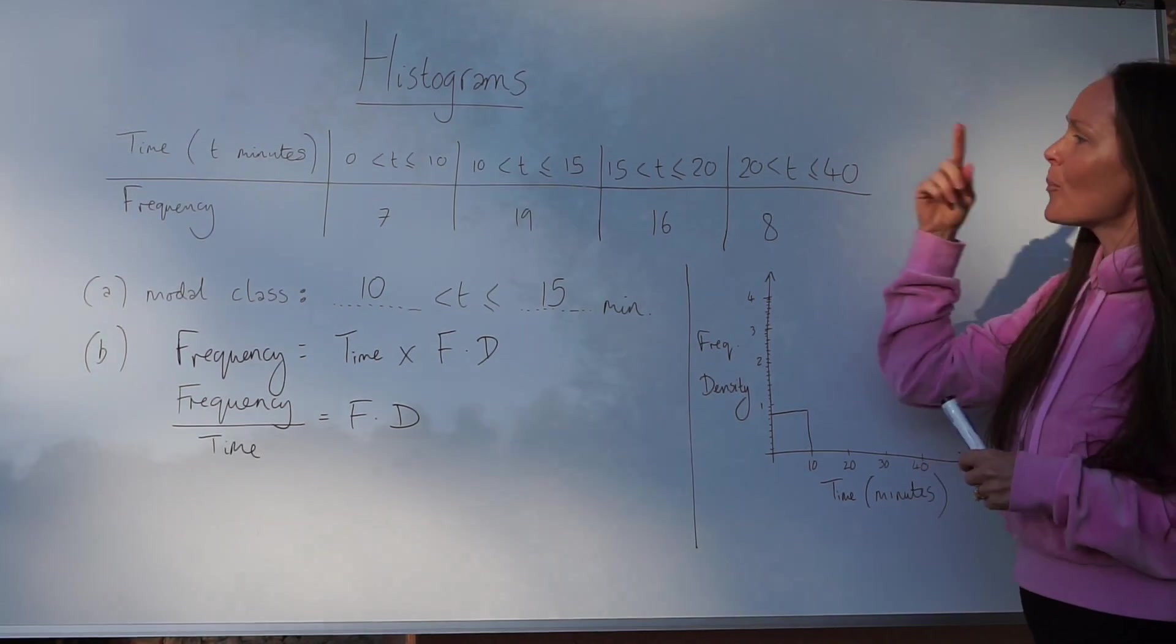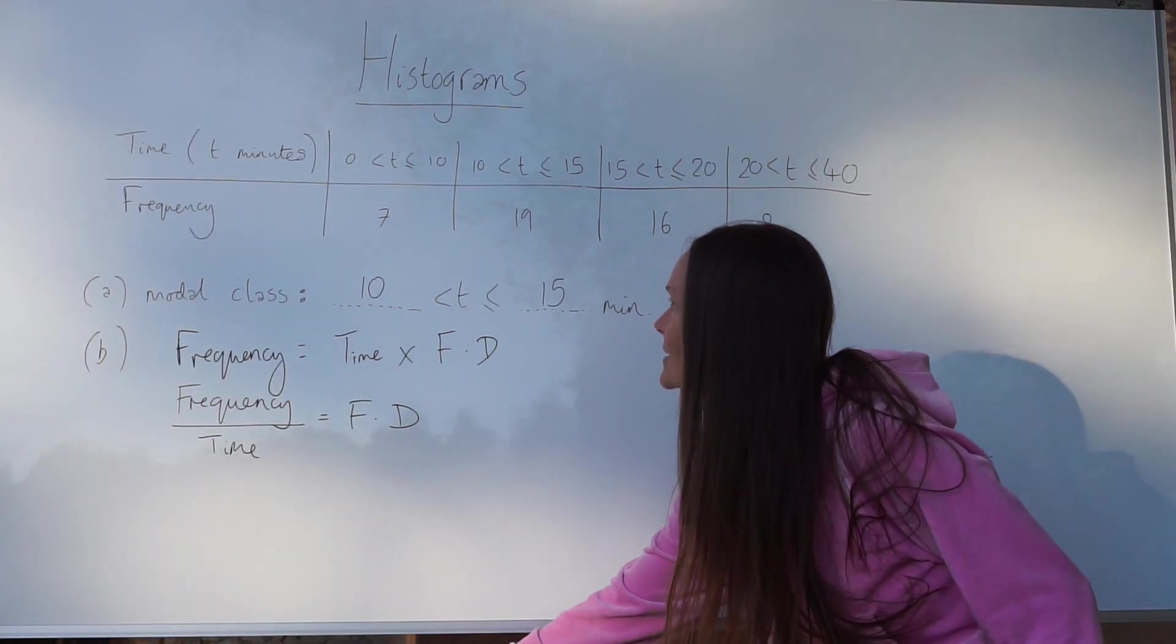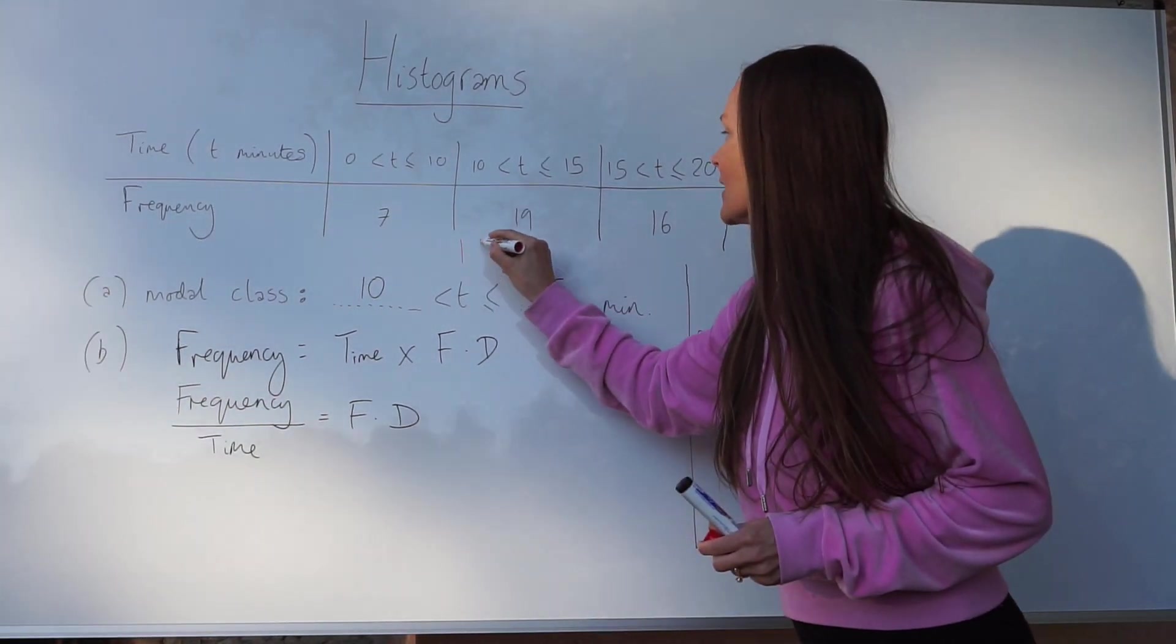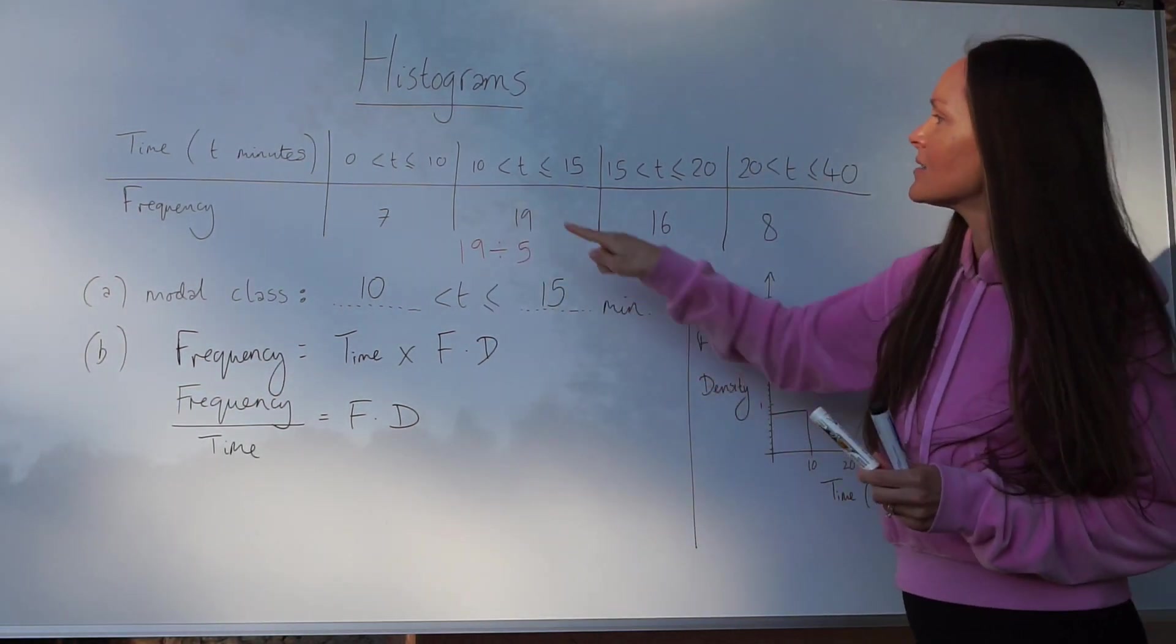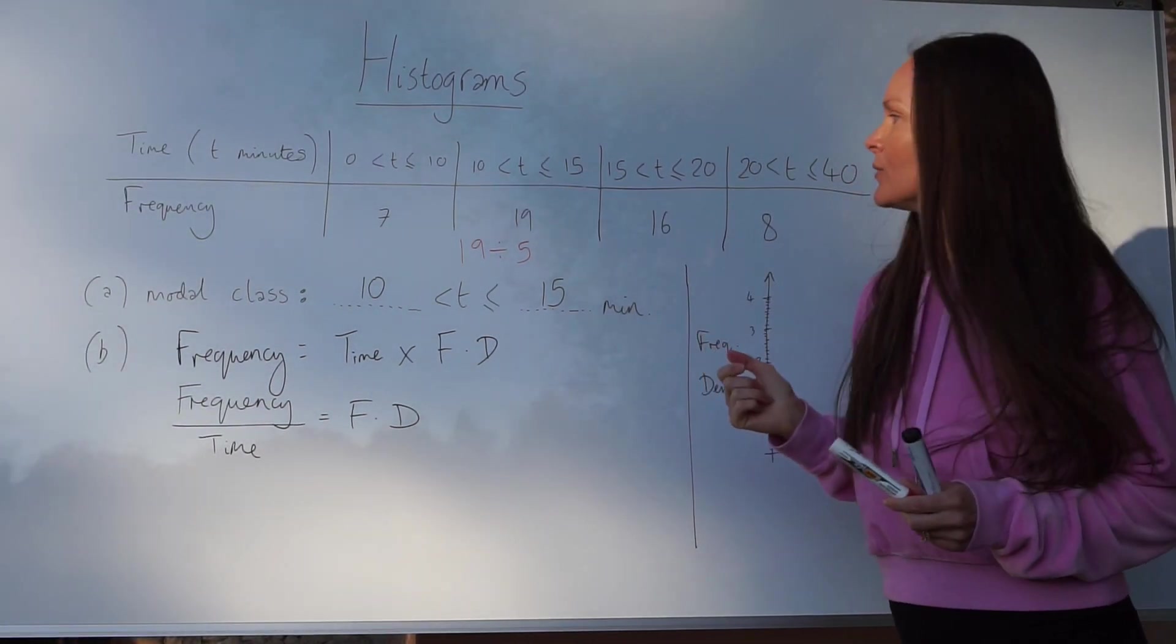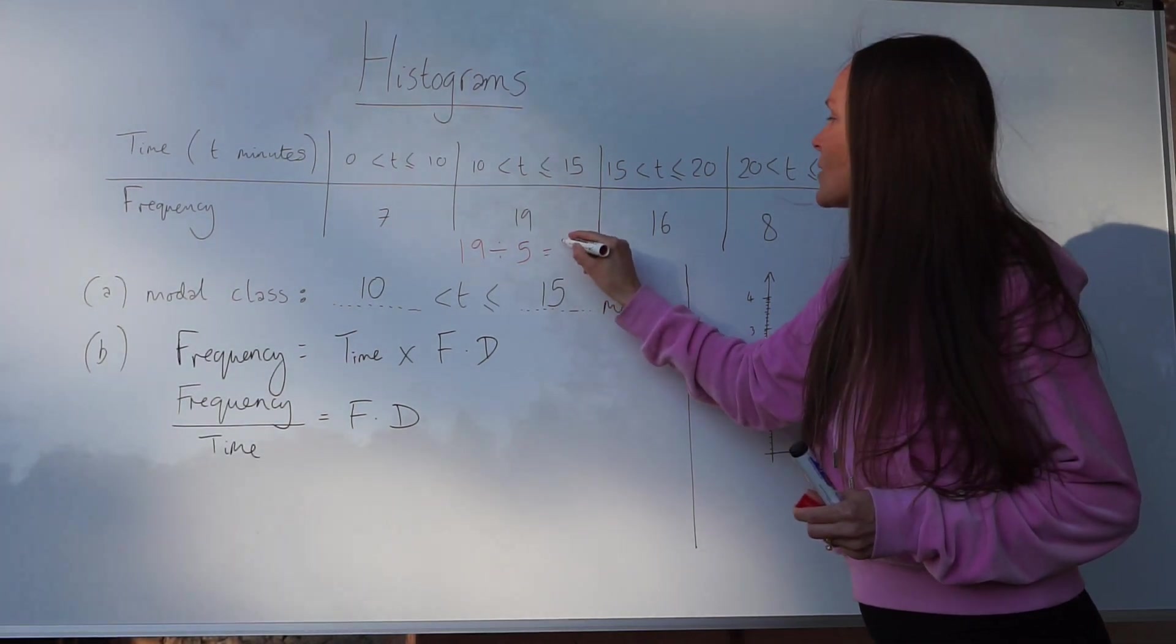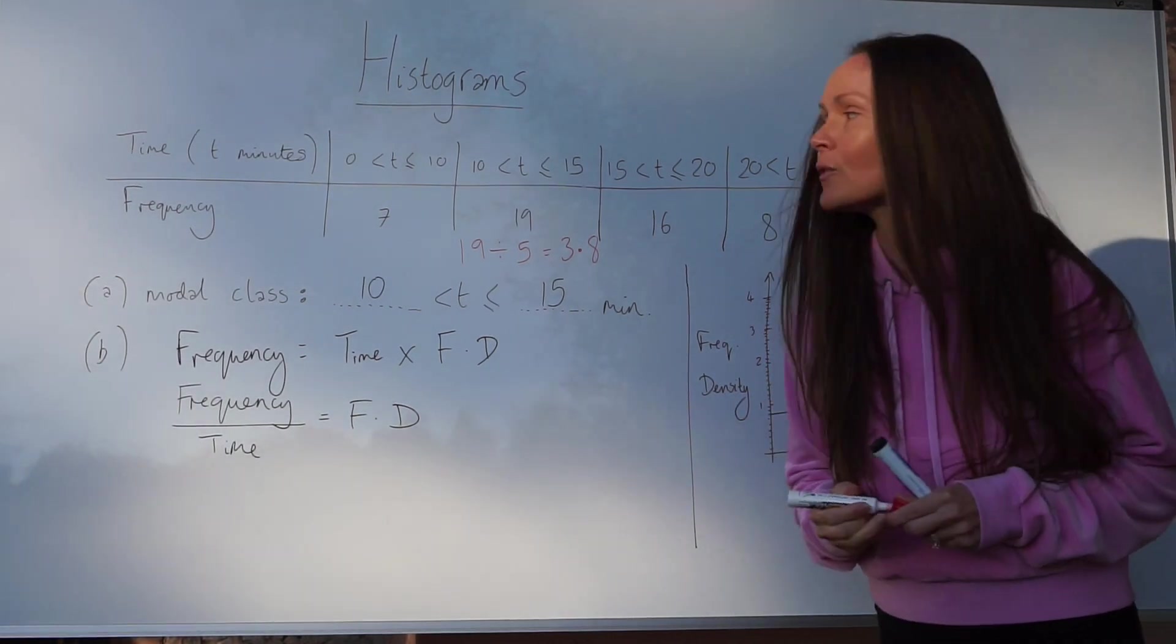Let's apply that to these up here. If I take the frequency for this one, 19, and divide it by time, I have to divide by 5 because the class width is 5. Can you see the difference between these numbers 10 and 15? It's 5. So if we divide 19 by 5, we get 3.8. So that's the first frequency density.